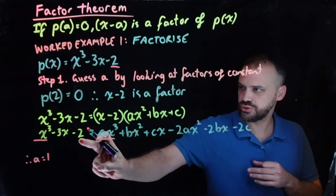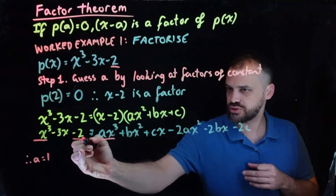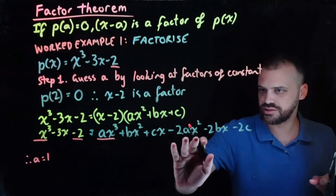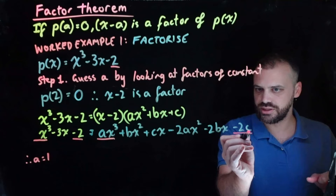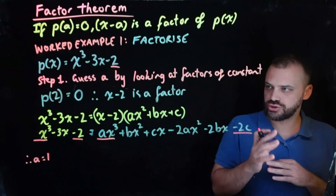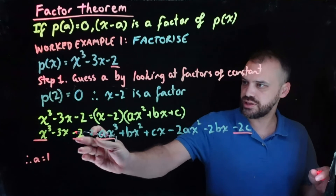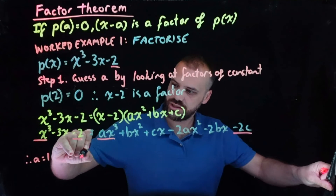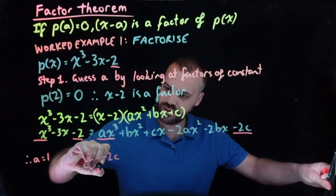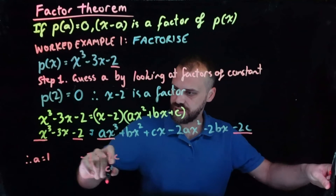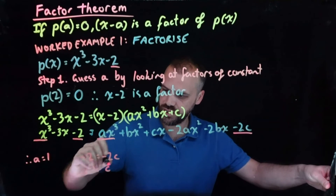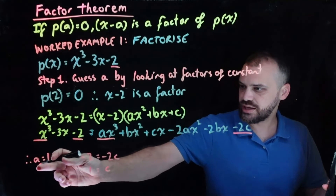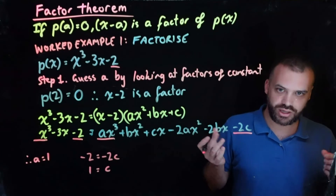We have a negative 2 as our constant term on the left. Looking at the right-hand side, all terms have x's in them except for negative 2c. So we know that negative 2 equals negative 2c, therefore c equals negative 2 divided by negative 2, which is 1. So now we know that a equals 1 and c equals 1.